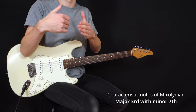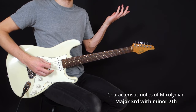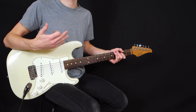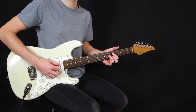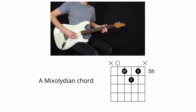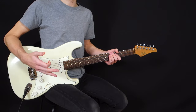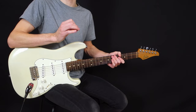Let's say I want to go through Mixolydian first. I need to know the characteristic notes of Mixolydian — it's having the major 3rd and the minor 7th at the same time. So I need the open A string and build a chord that has at least the major 3rd and the minor 7th. I could have something like this: on the 4th string I have the minor 7th, here I have the major 3rd, and the perfect 5th — all work with Mixolydian.